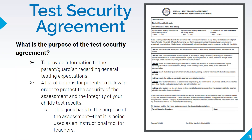Regarding test irregularities: if something happens — for example, your student is testing and their phone rings and they answer it — that is considered a test irregularity. At that point, you need to contact the teacher and tell them what happened so it can be documented. It is possible that the student's test might be considered invalid. The point of the assessment is for us to make accurate instructional decisions, so if something has impacted the test results, we need to make sure it is documented. If there is any kind of test irregularity, make sure you contact your teacher and let him or her know.